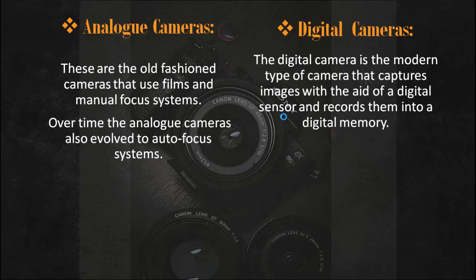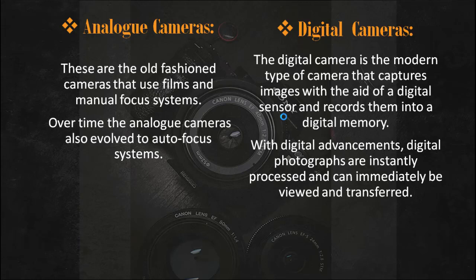Digital cameras use a digital sensor right inside the camera body. With analog cameras you needed to load different films — those films were usually 36 exposures. With digital cameras the sensor does not get exhausted; you use it as long as the lifespan of the camera allows. With digital advancement, digital photographs are instantly processed and can immediately be viewed and transferred, whereas in the analog days you could not view them immediately.